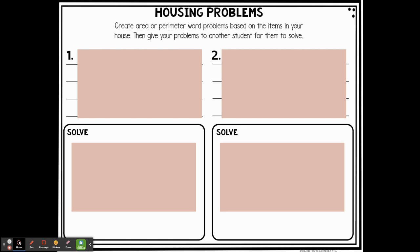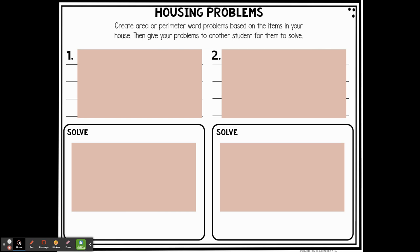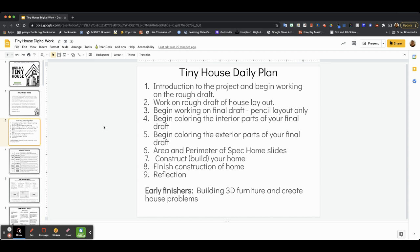And the last early finisher is the housing problems. Here you can create area or perimeter word problems based on the items in your house. Then give your problems to another student or a family member to try to solve them. We've got four spots for you. That is our tiny house project. It'll take you a while — we've got a rough plan of nine days. It may take you longer, or you may go fast and get to do the early finishers. Good luck!